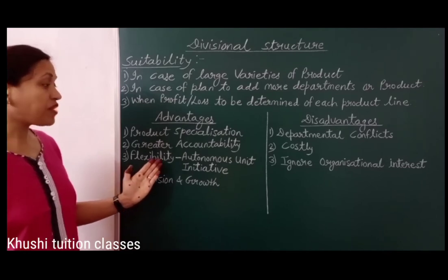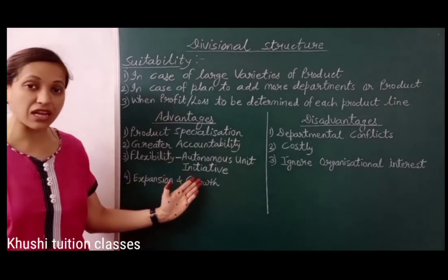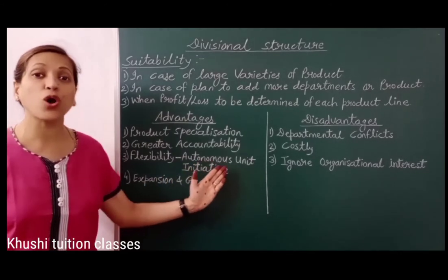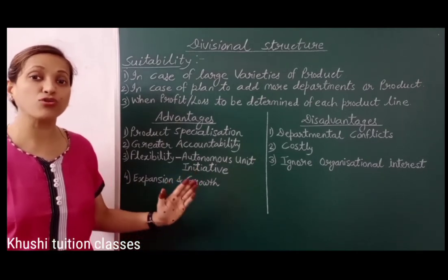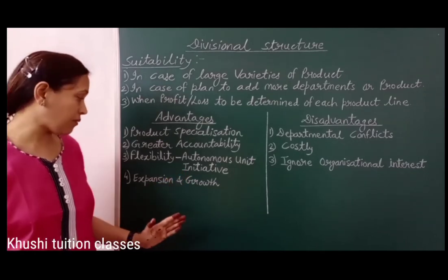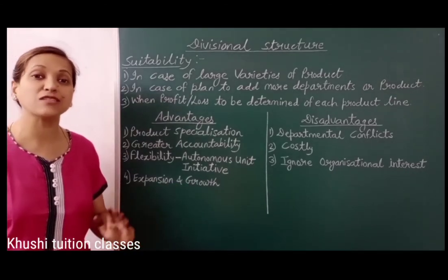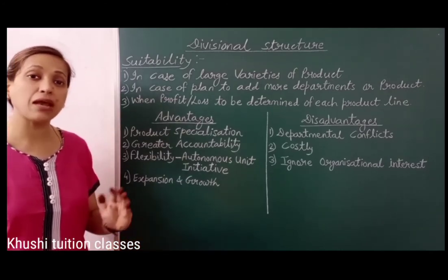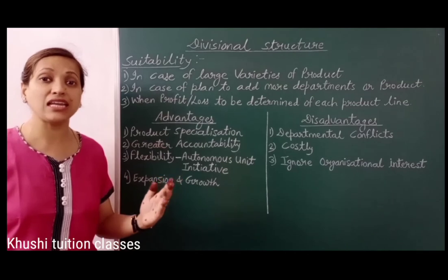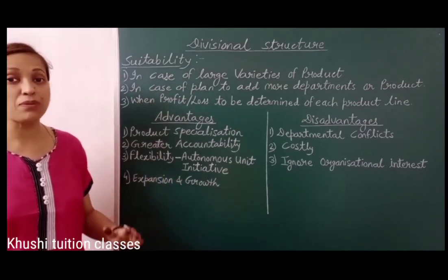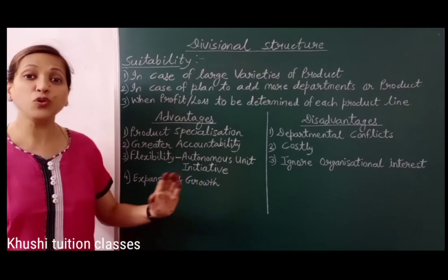The third is flexibility — autonomous unit initiative. अब हर department के लिए departmental manager और उसकी पूरी team initiative लेगी. इस manager के पास कुछ autonomous powers भी होगी. यानि इस department से related सभी decisions यह manager ले सकता है और उन्हें quickly implement भी कर सकता है. The fourth is expansion and growth. Divisional structure follow करने से organization quickly expand कर सकती है — product line को large scale पर operate कर सकती है, अपना total production और sale किसी भी product के लिए increase कर सकती है, और अपने business को grow कर सकती है, diversify कर सकती है.